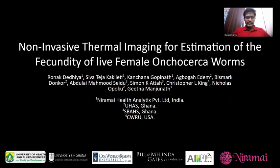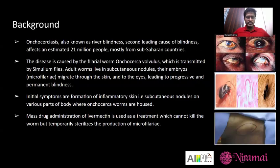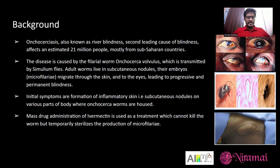We will see about Onchocerciasis and why fecundity is an important parameter and how thermal imaging can be used for its estimation. River blindness, or Onchocerciasis, is the second leading cause of blindness. It affects half a million people. It is spread by a parasite called Onchocerca volvulus, and hence the name Onchocerciasis. It is transmitted by a fly, and this worm stays in subcutaneous nodules around the skin region. Their offspring usually travel through the skin and migrate to the eyes, where they cause permanent blindness. The initial symptoms are the formation of inflammation in different parts of the body, also called subcutaneous nodules.